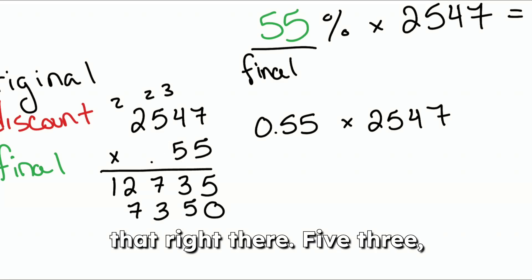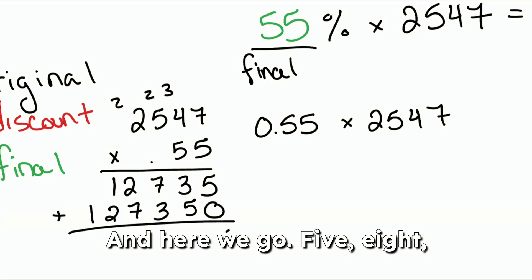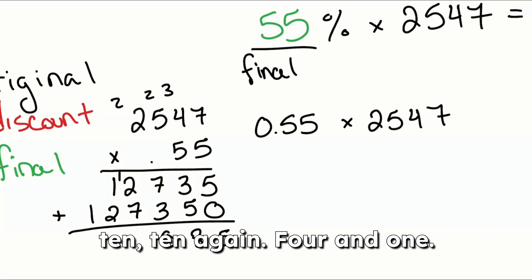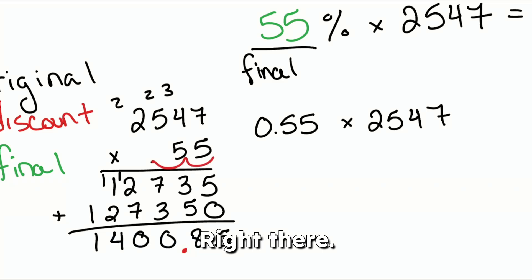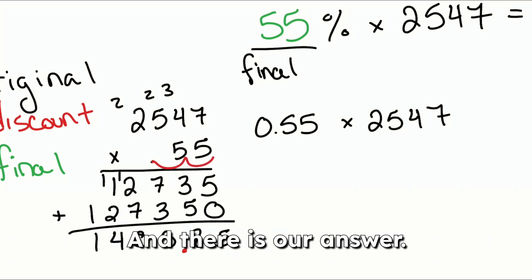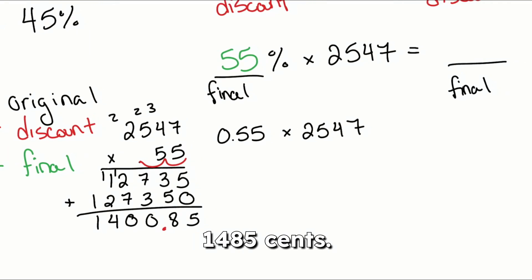The partial products are 5, 3, 7, 2, 1. Adding it all together we get: 5, 8, 10, 10, 4, 1. We move the decimal place two spots, and there is our answer: $1,485.85.